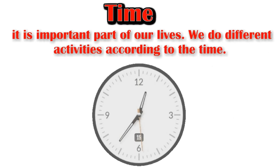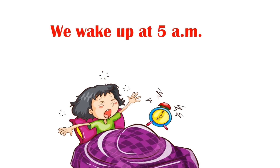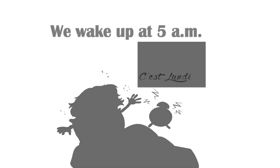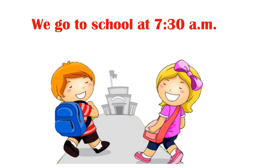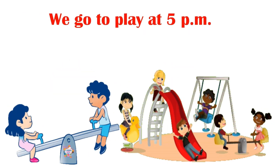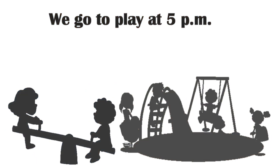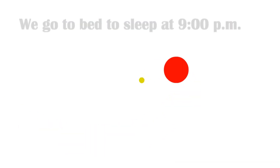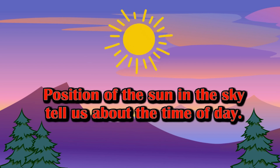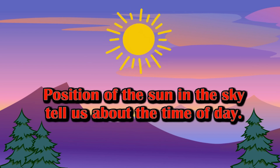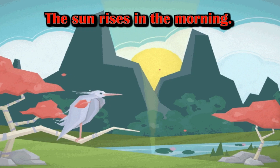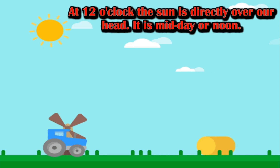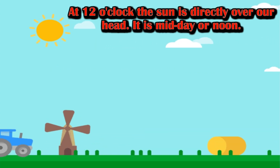Time: it is an important part of our lives. We do different activities according to the time. We wake up at 5 am, go to school at 7:30 am, go to play at 5 pm, and go to bed at 9 pm. The position of the sun in the sky tells us about the time of day. The sun rises in the morning. At 12 o'clock, the sun is directly over our head.